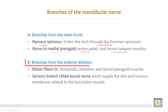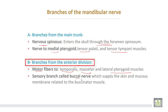Branches from the anterior division of the mandibular nerve: there are motor branches directed to the temporalis muscle, masseter muscle, and the lateral pterygoid muscle. Then a sensory branch called the buccal nerve, which supplies the skin and the mucous membrane related to the buccinator muscle. However, the buccinator muscle itself is supplied by the facial nerve.